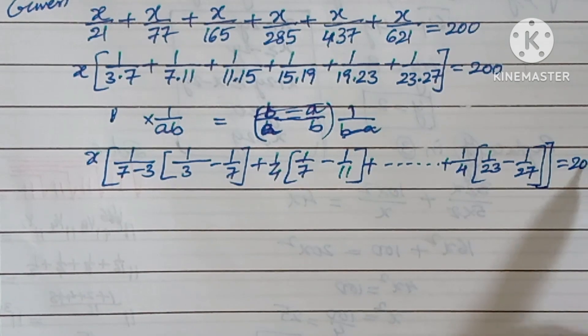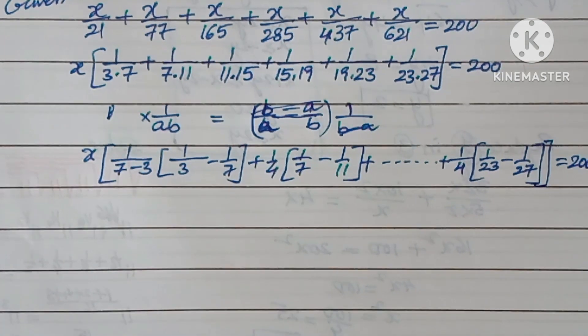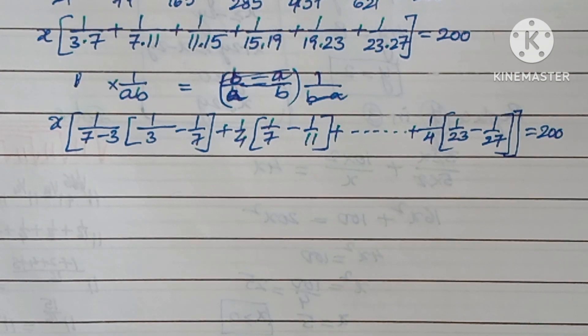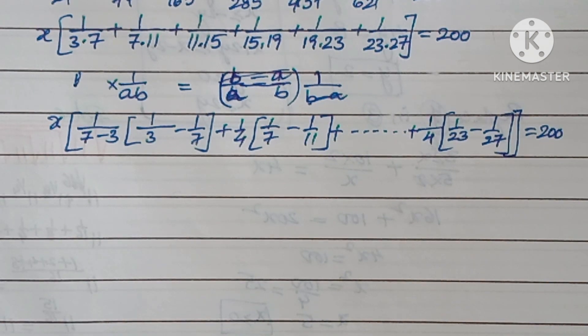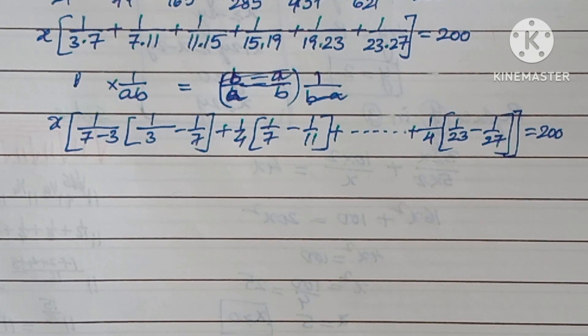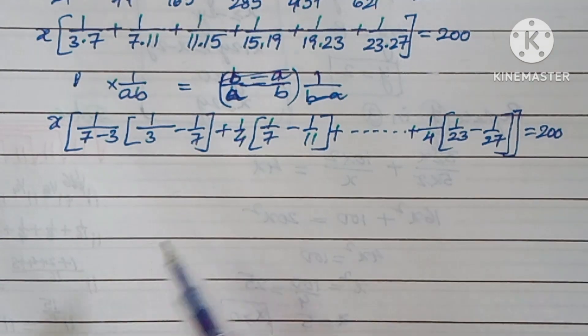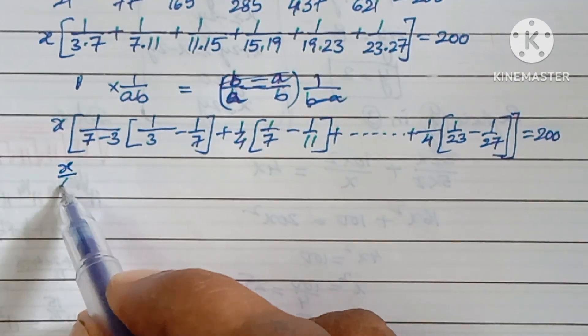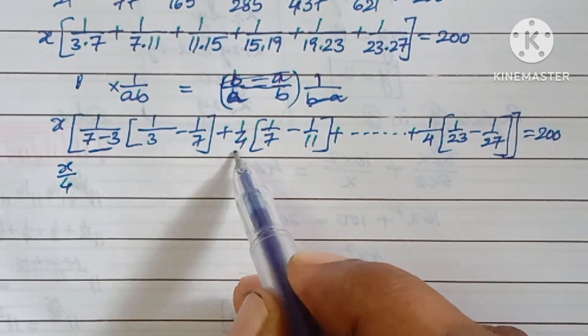This is the logical step we are having now. You can take 1/4 common. In all the terms you are getting 1/4.